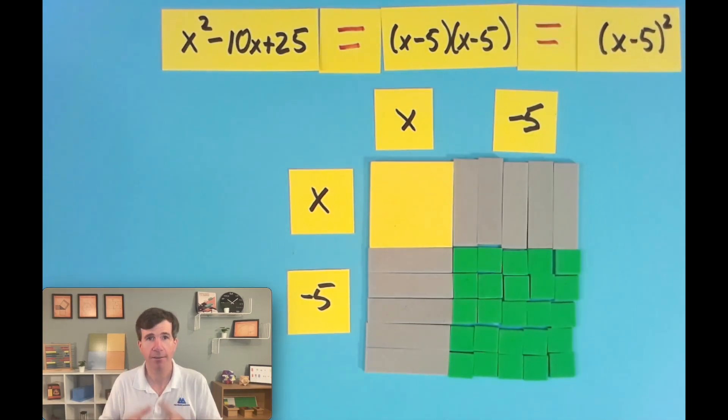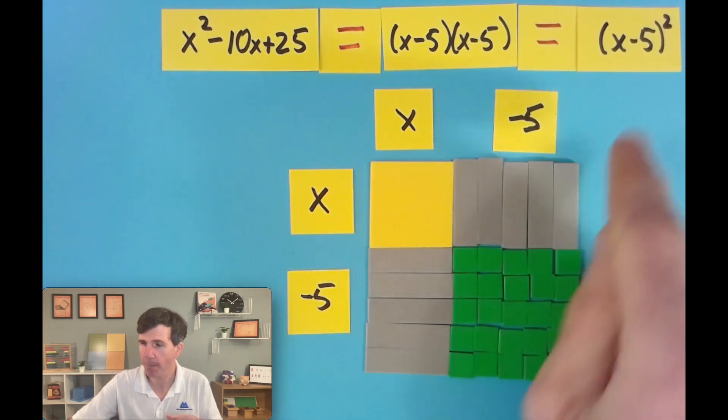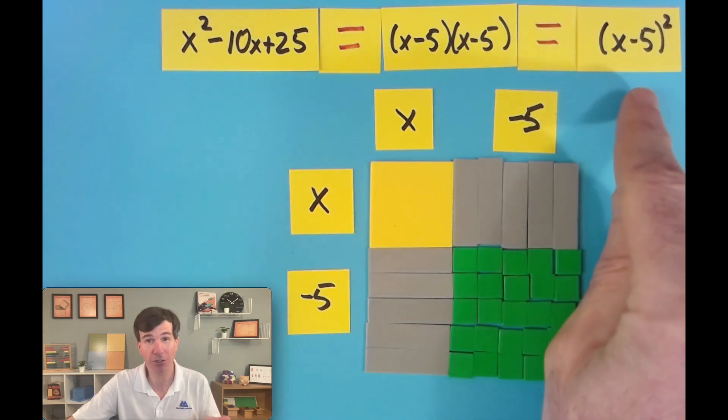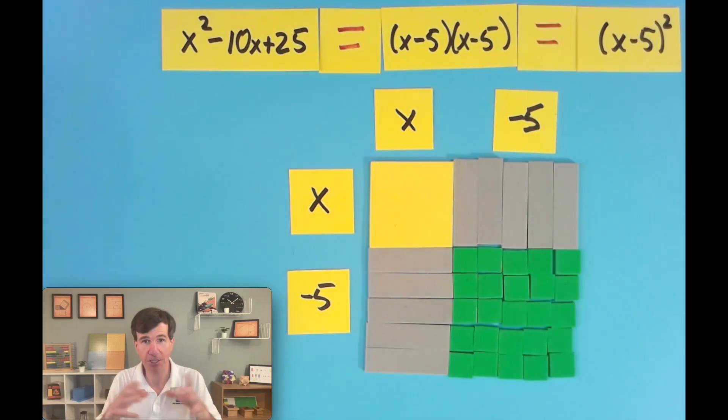So I'll say, now we've had two examples now where this turned out to be a very special rectangle, the square. So we have the same factor twice. We could write it, even though there's two factors here, we can write it much more succinctly as x minus 5 squared. And the last one we had x plus 3 squared.